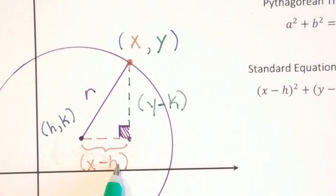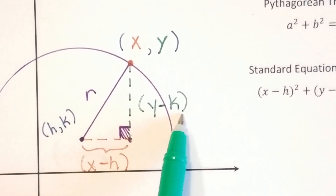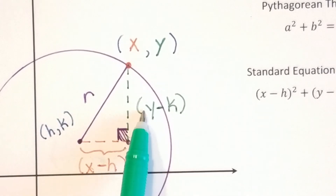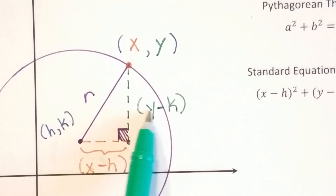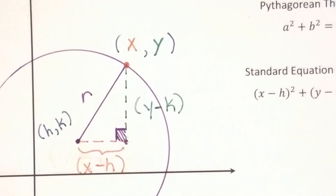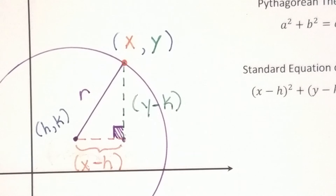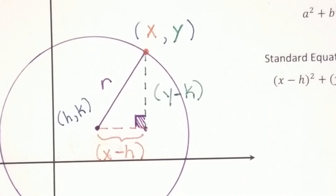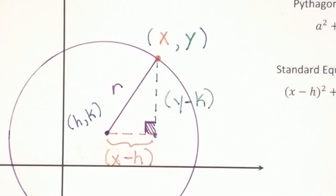So instead of calling this a, this b, and this c, I'm calling this x minus h, this y minus k, and the radius r. So let's get an equation for r, because once we have that, we'll have the equation of our circle.